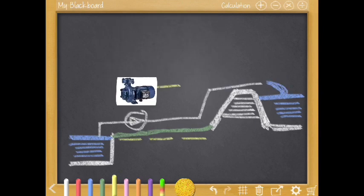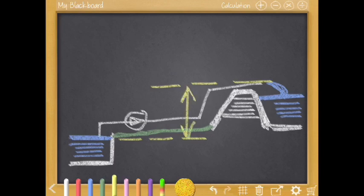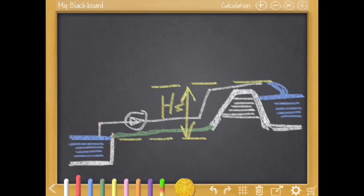Identify the two elevations where the system is open to atmosphere. The difference is HS. The left and the right are marked with a red circle.